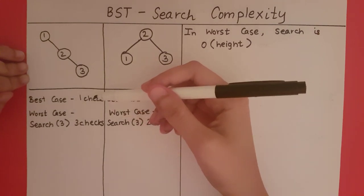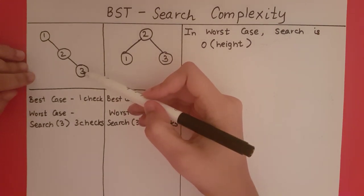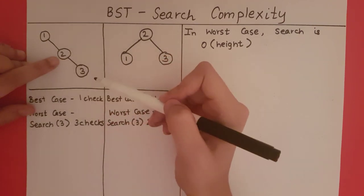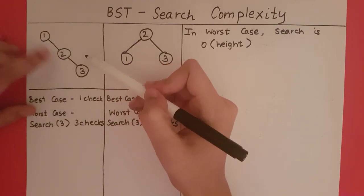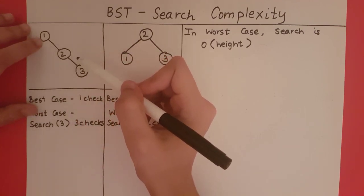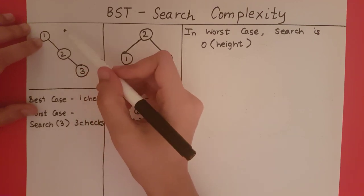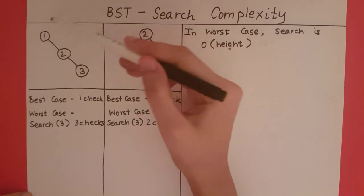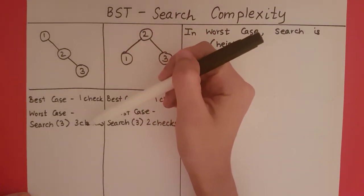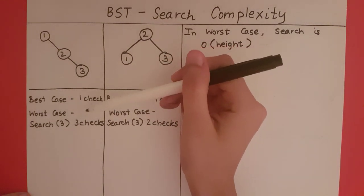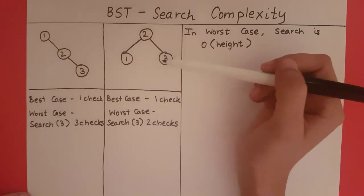Let's go back to our examples and find the height of the first tree. Node 3 is a leaf, so its height is 0. Node 2 has height 1 plus maximum height of its children: 0 plus 1 equals 1. The root node 1 has height 1 plus 1, which equals 2. So the height of this tree is 2, and we are making 3 checks in the worst case. The number of checks equals 1 plus the height of the tree.